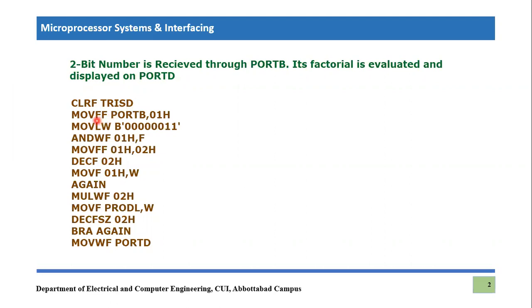Then what we are doing — Move File to File, Port B comma 01h. That means we are just copying the data of Port B onto another file, which is 01h. So Port B's two-bit number is being received through Port B, which is the input port, and whatever data is received on Port B is being copied into 01h.